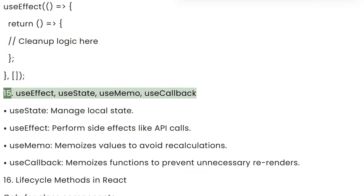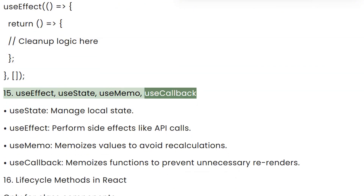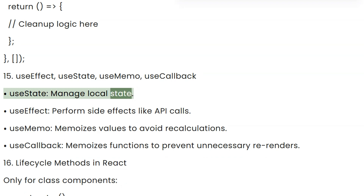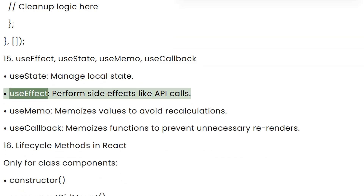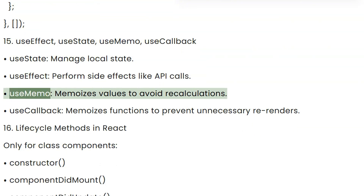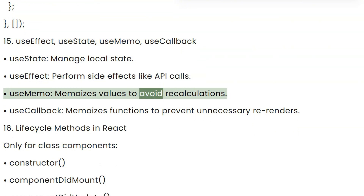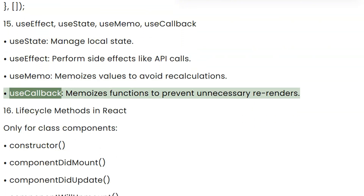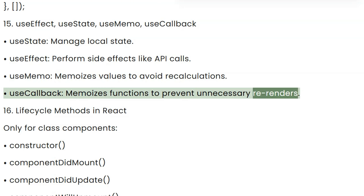Question 15: useEffect, useState, useMemo, useCallback. useState: manages local state. useEffect: performs side effects like API calls. useMemo: memoizes values to avoid recalculations. useCallback: memoizes functions to prevent unnecessary re-renders.